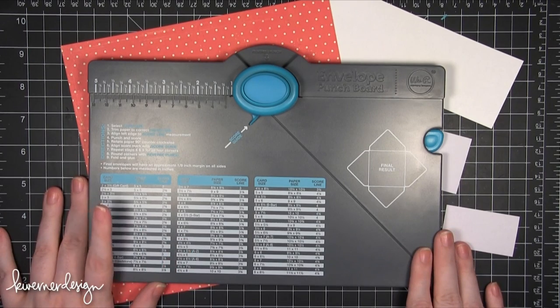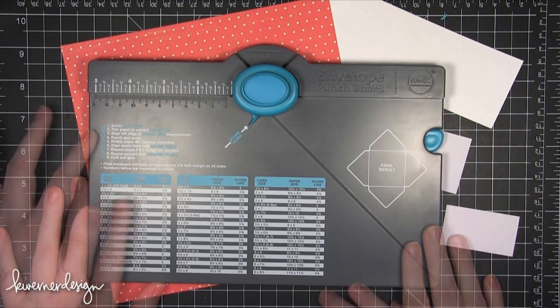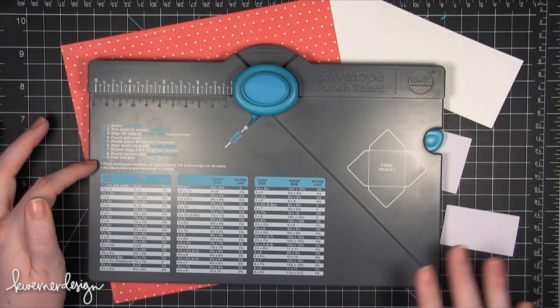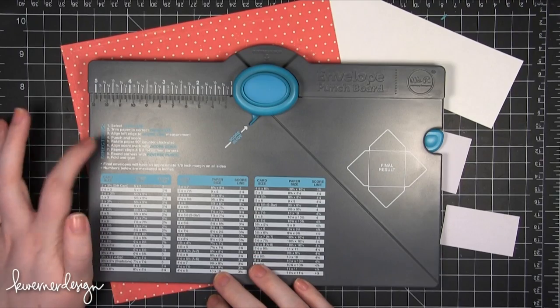So this is the envelope punch board. I'm going to show you a little bit about it and then walk you through an envelope and then we'll get to the decorating. All of the directions are up here on the board if you ever need any more instruction or if it's been a while since you've made an envelope you can always come up here to the directions.